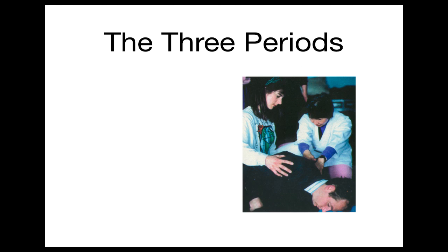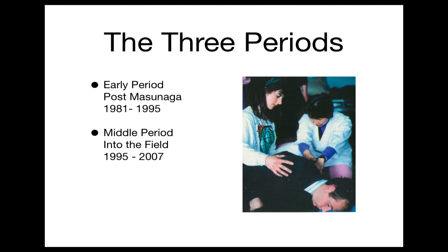I've identified three periods of development in Pauline's work. The early period, which I've called the post-Masanaga period, extended from the mid to late 70s through to the mid-90s — during this time Pauline was trying to systematise and complete Masanaga's Zen Shiatsu system. The middle period was from about the mid-90s until around 2007, when Pauline made a series of discoveries about energy work, taking her understanding from the meridians being in the body to working with a wider energetic field. And in the late period, between 2007 and her death in 2010, she was working with an even more expanded awareness of life itself.